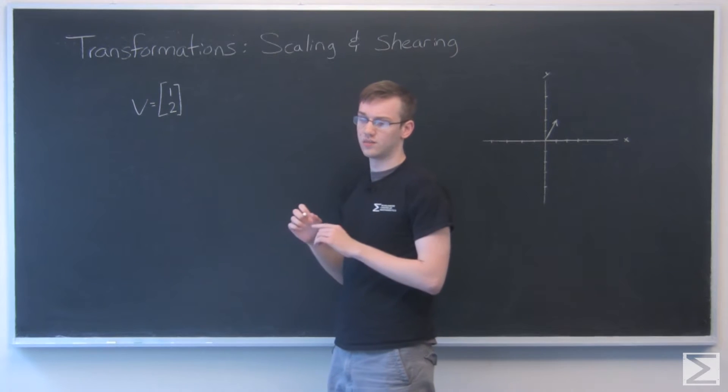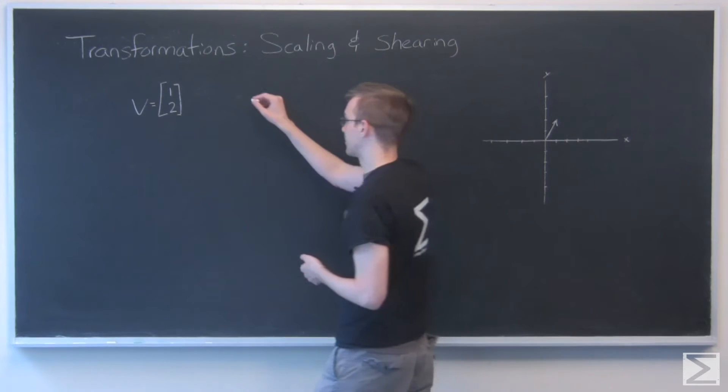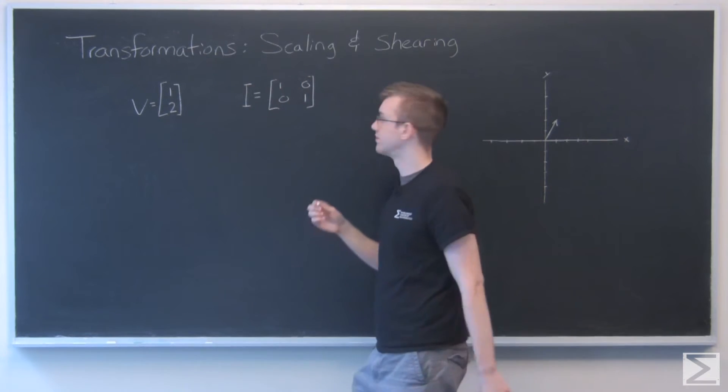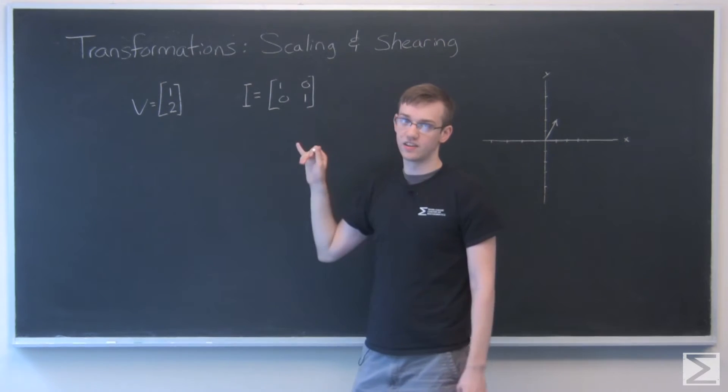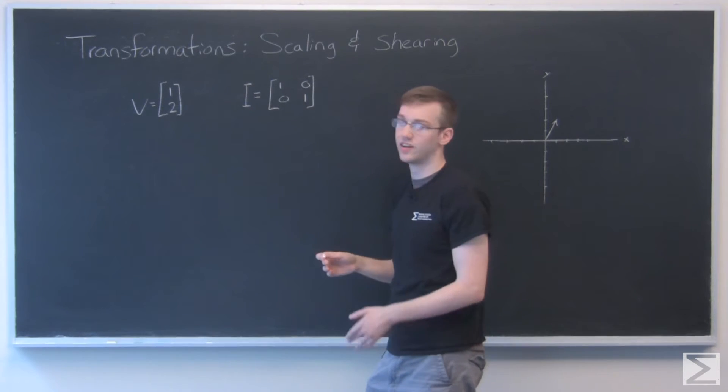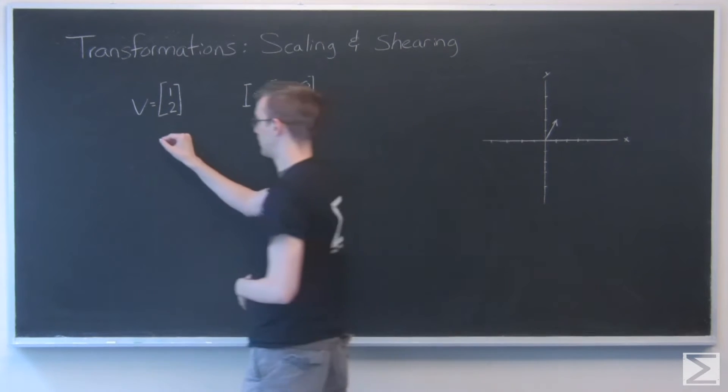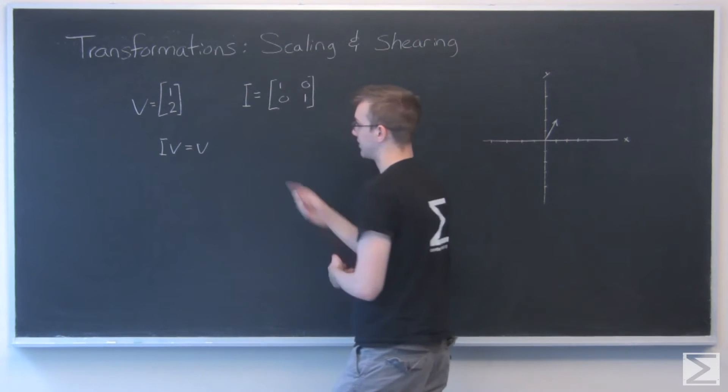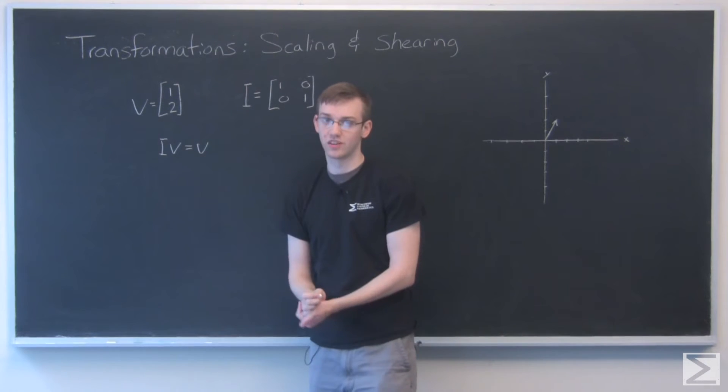So first, the most basic matrix transformation we have is the identity matrix, which doesn't do anything. The identity looks like this: it's just 1s along a diagonal and 0s everywhere else. This is the identity of a 2 by 2. If you have 3 by 3 or 4 by 4, it's the same, just 0s everywhere except along the main diagonal. And if we multiply i by v, that's just going to equal v. Multiplying the two, we'll just give out the same vector that we started with.